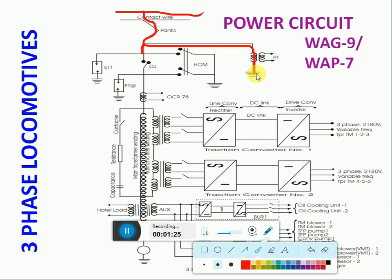Further, the PT will step down the supply and provide it to the MVR, Minimum Voltage Relay, available in the SB1 panel, and to U-meters and OHG meters available in the cab. The PT supply will go to the MVR, U-meter, and SR1 and SR2 electronics through the PT fuse.